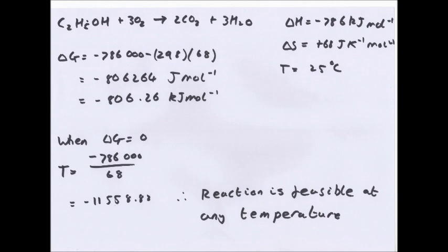So here's an example. Ethanol plus three oxygen becomes two carbon dioxide plus three H2O. So the combustion of ethanol. The delta H for this reaction is minus 786 kilojoules per mole. Delta S equals 68 joules per Kelvin mole minus one. The temperature is 25 degrees. They generally give you 25 degrees Celsius because that is standard conditions, which is also known as 298 Kelvin.